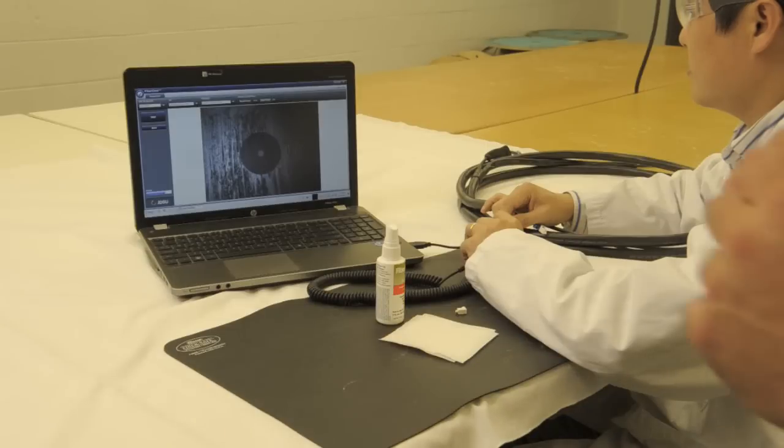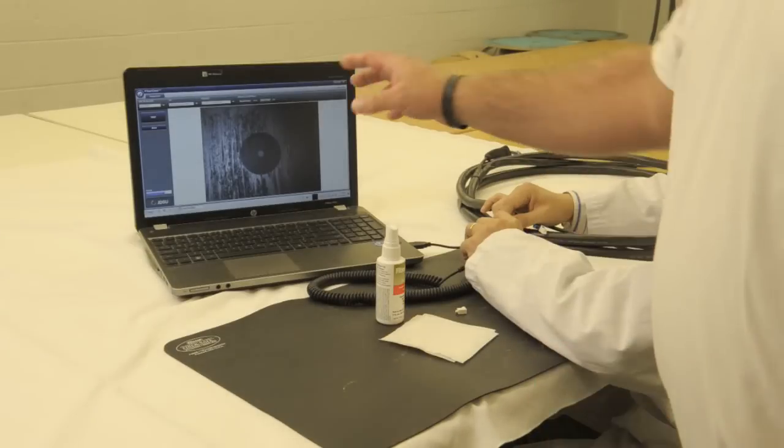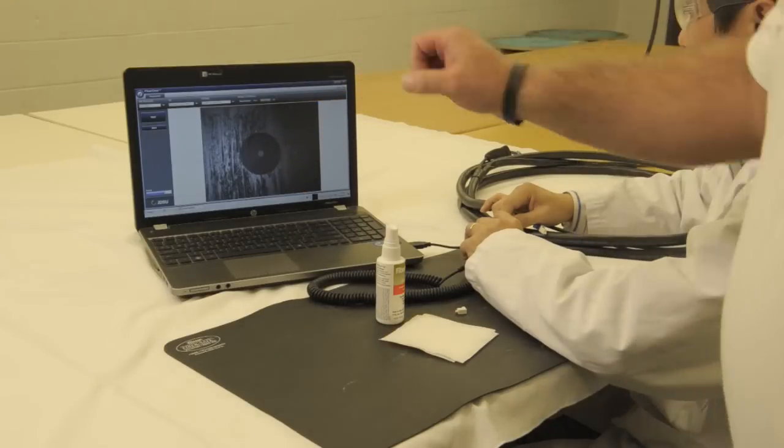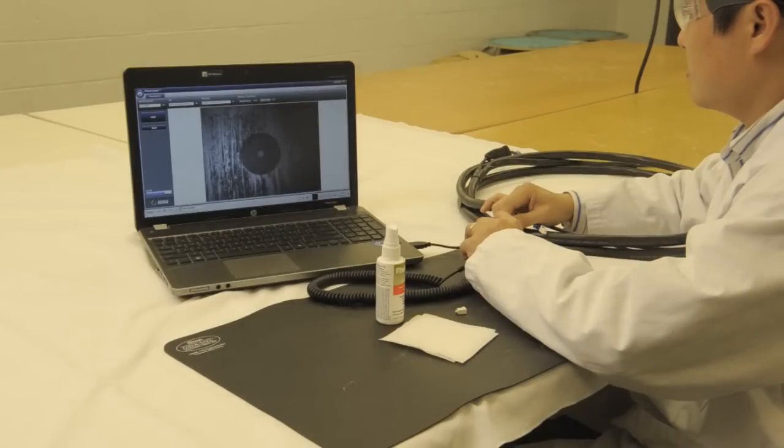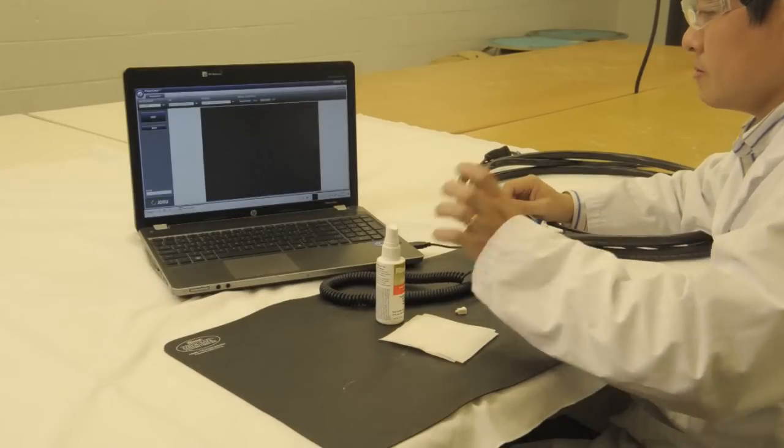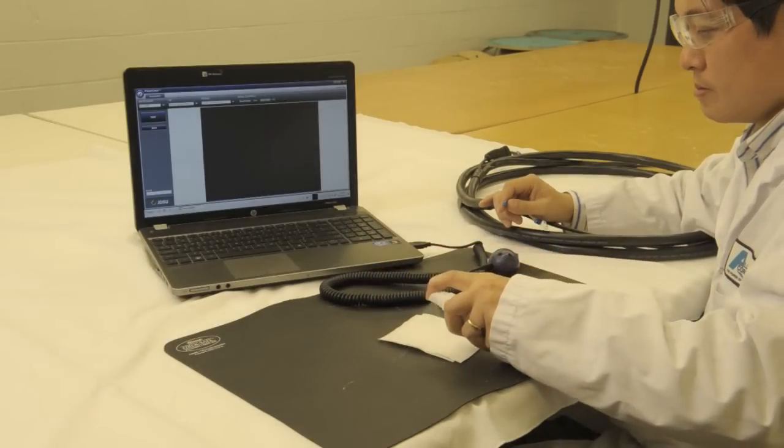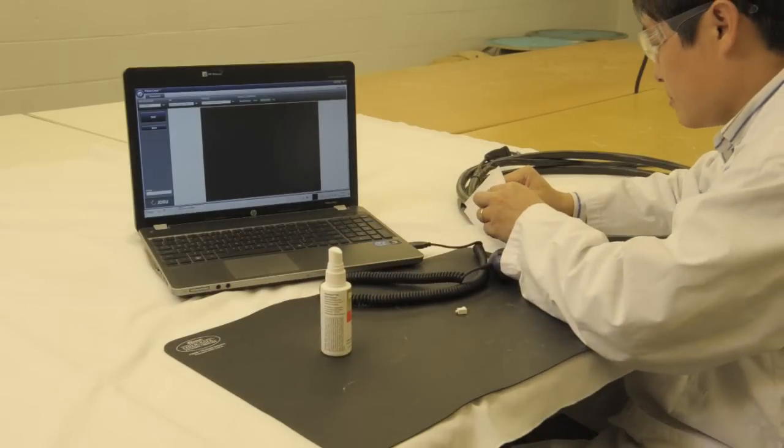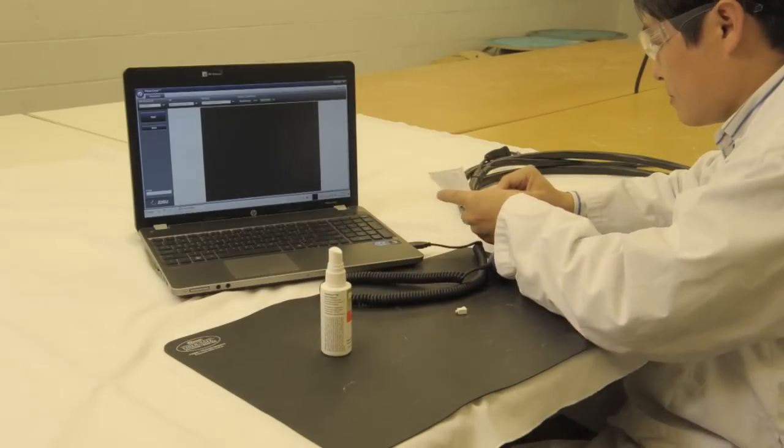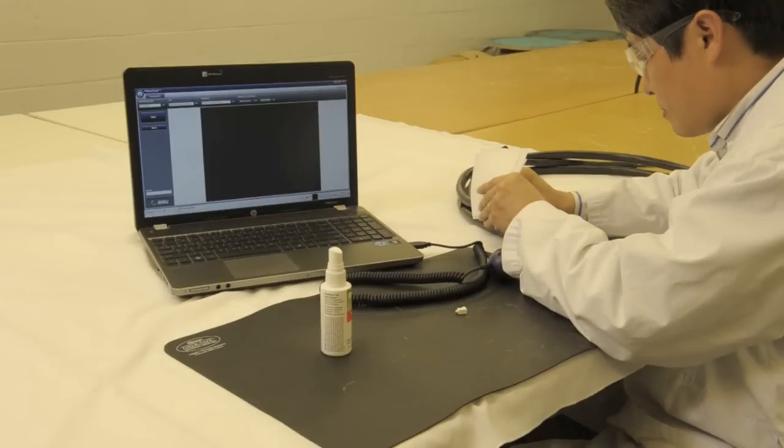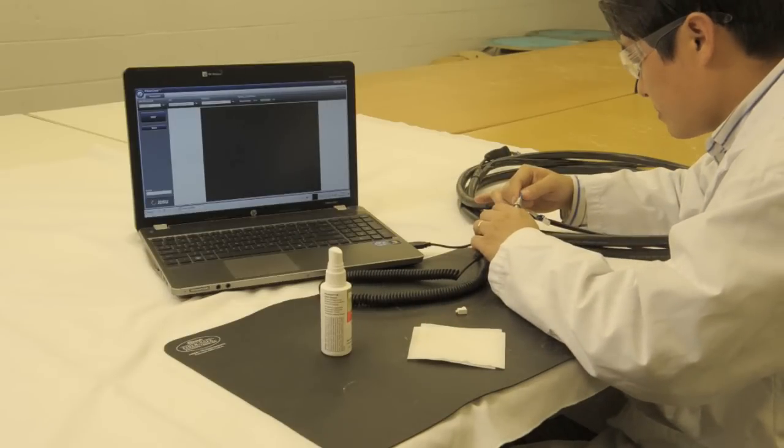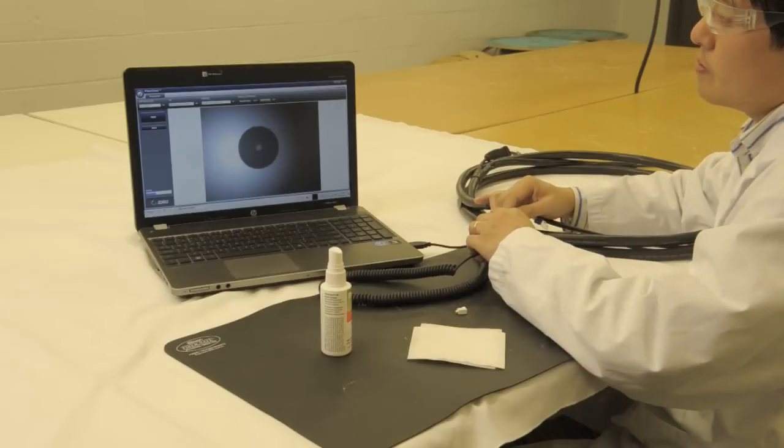So here we show a fiber end face with some heavy contamination on it. As you can see, over the ferrule and the fiber itself, there's some heavy contamination. So for this, we're going to use the wet to dry method. We're going to use our solvent spray on a 4x4 non-woven wipe. We're going to go wet to clean it, so it's wet to dry. And then we'll inspect it again. Looks very good.